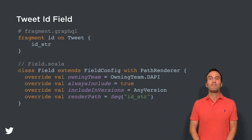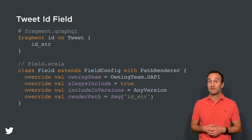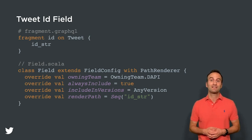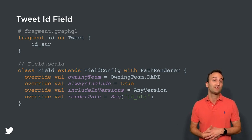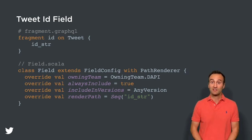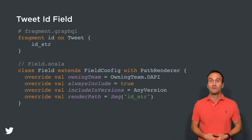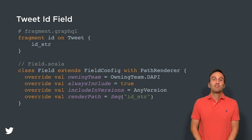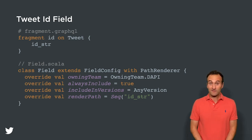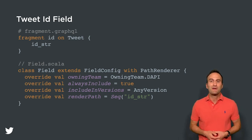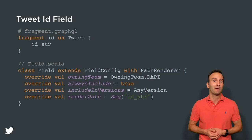This fragment is used to retrieve all the tweet data needed to render just this field — in this case, we query for the ID string field in the GraphQL schema. On the bottom of the screen, you can see the contents of the field.scala file, which is used to configure various aspects of the field. The owning team is used to determine where to send automated pages when this field is experiencing problems. The always_include field is set to true, making this a default field. We then specify that this field should be returned in all major and minor versions of our API, and finally we use a special path-based renderer, which lets us declaratively specify how to render the field without the need for imperative code.